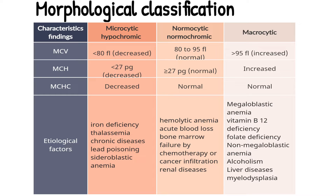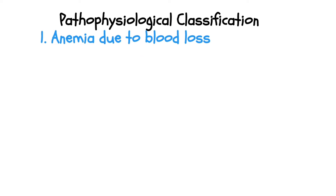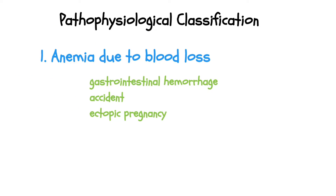Normal MCV, MCH, and MCHC values indicate normocytic normochromic anemia. Possible causes include hemolytic anemia, acute blood loss, bone marrow failure from chemotherapy or cancer infiltration, and renal diseases. Both MCV and MCH are increased with normal MCHC in macrocytic anemia. The etiological factors can be divided into two types: megaloblastic anemia, caused by vitamin B12 deficiency and folate deficiency, and non-megaloblastic anemia, caused by alcoholism, liver diseases, and myelodysplasia.